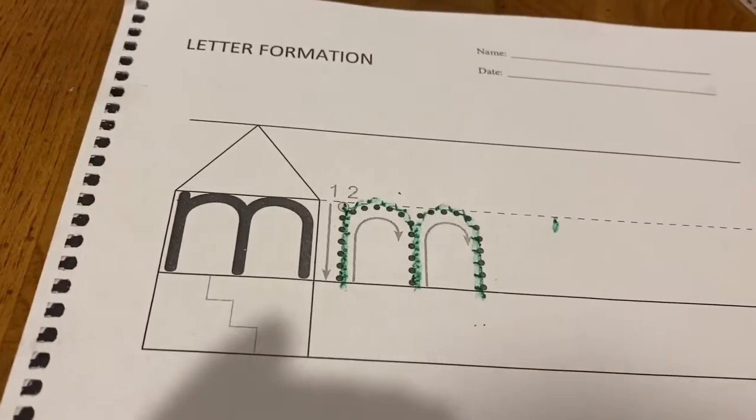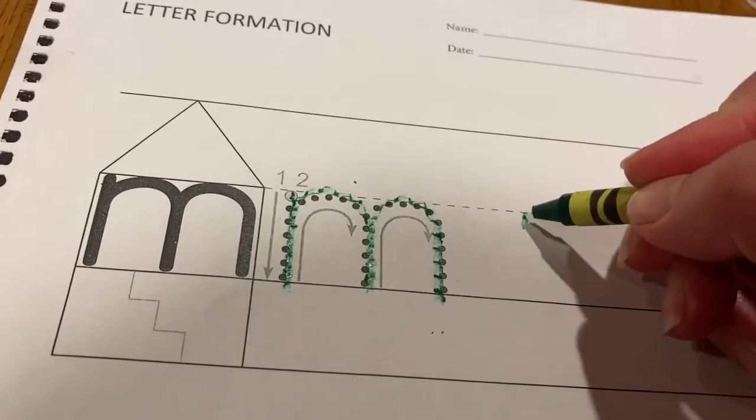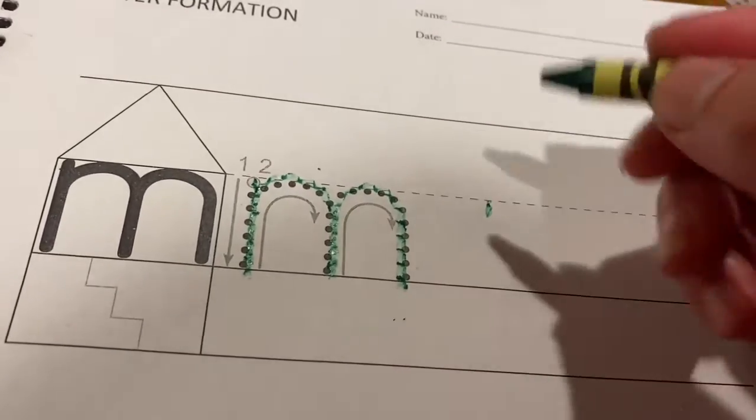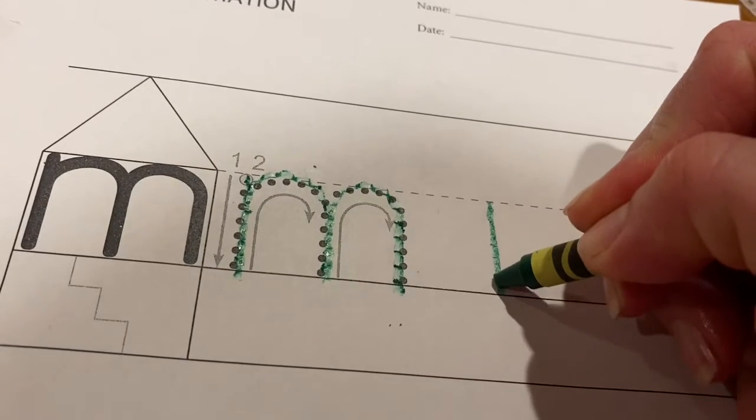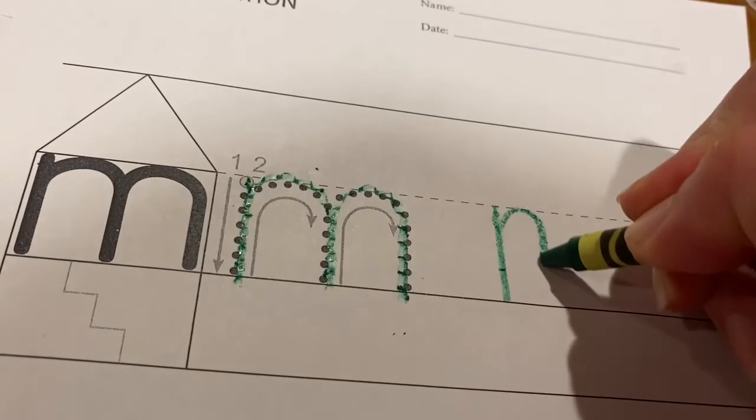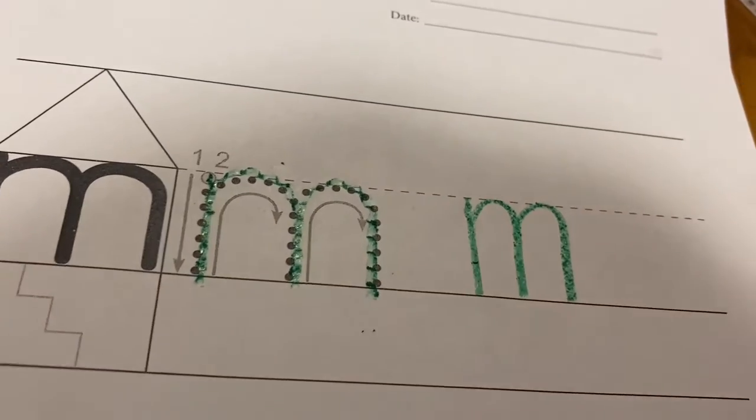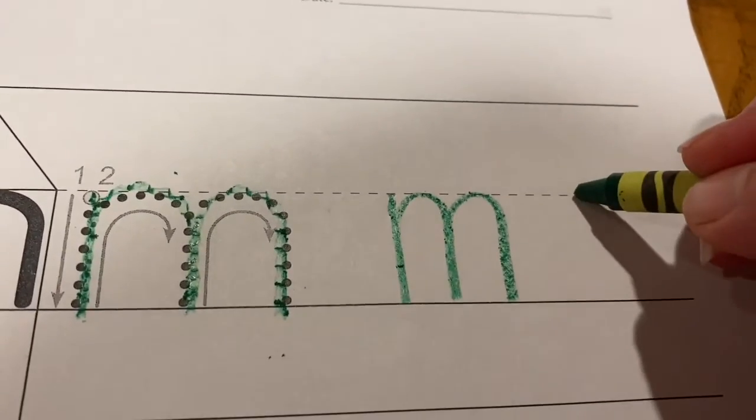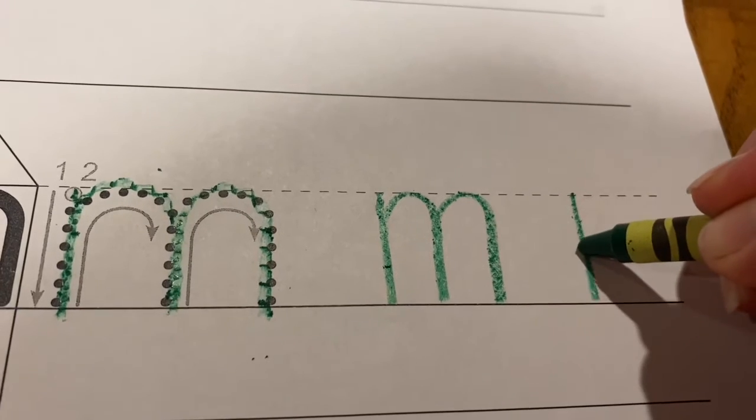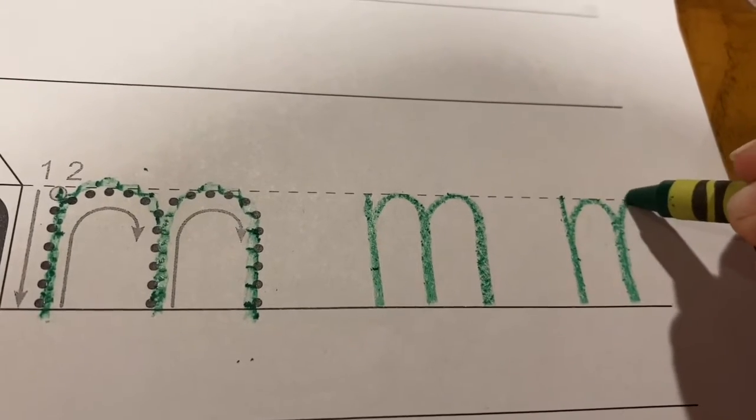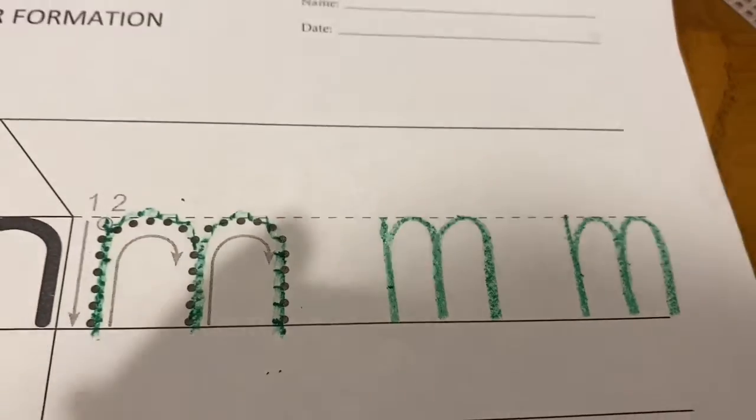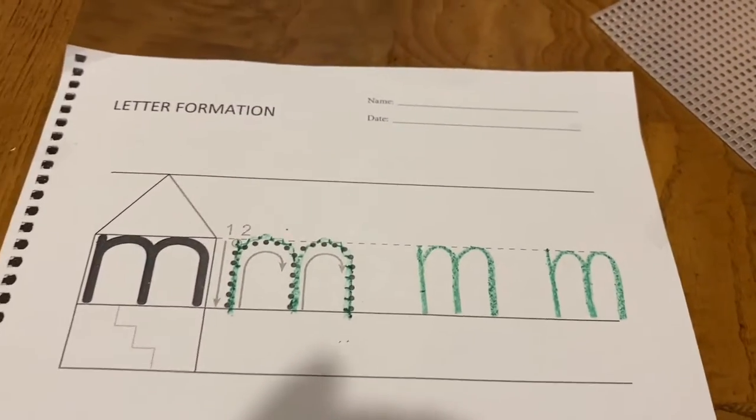Let's practice again. Take your green crayon now and there's no bumpy screen this time. Going to do a line down, up and around, up and scoop around. One more, line down, up and scoop around, up and scoop around. That is your lowercase m.